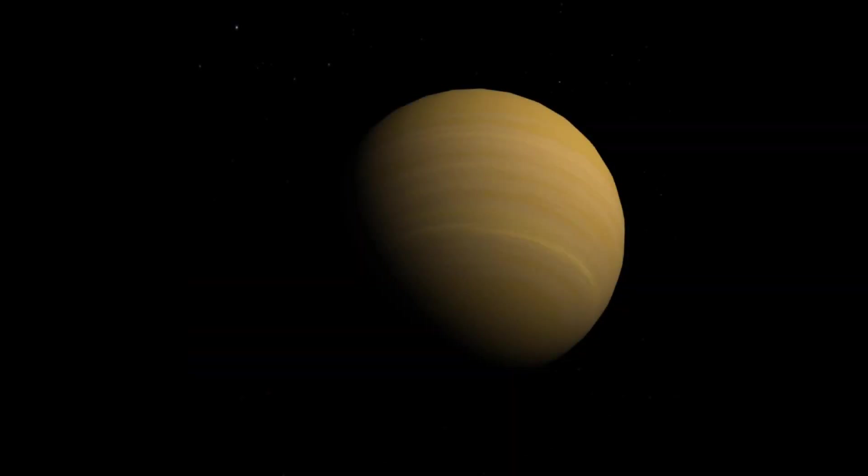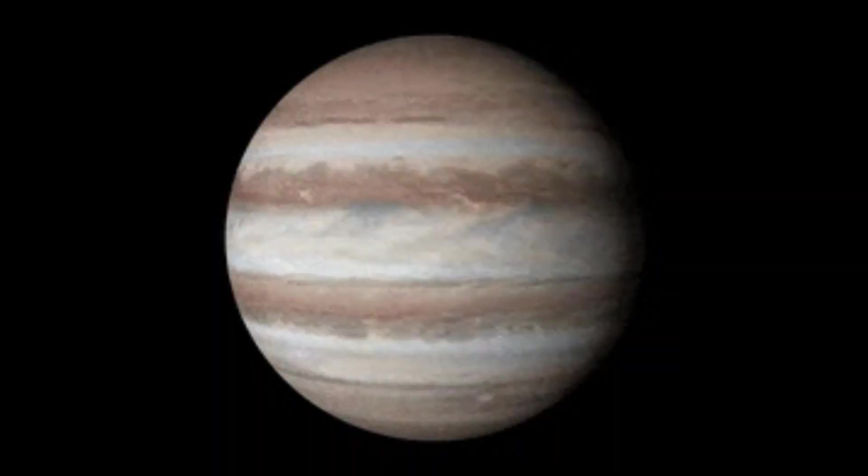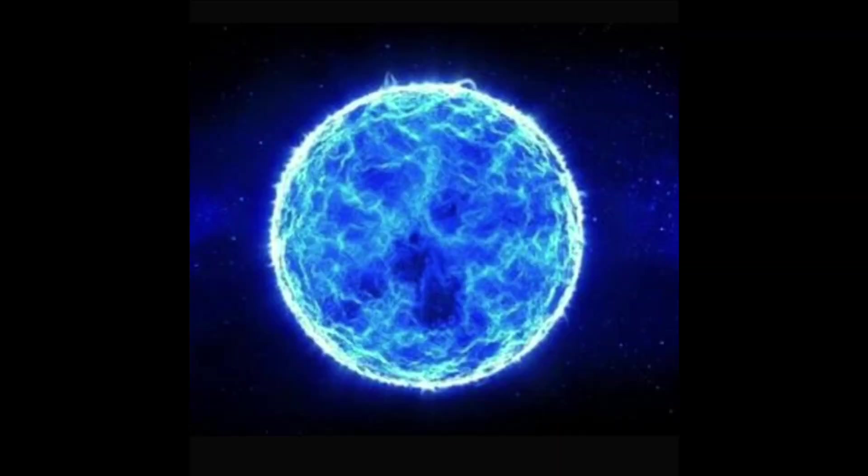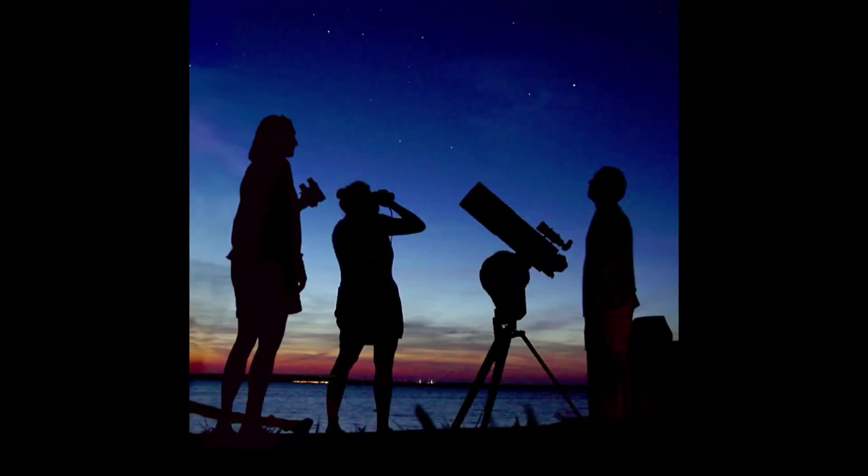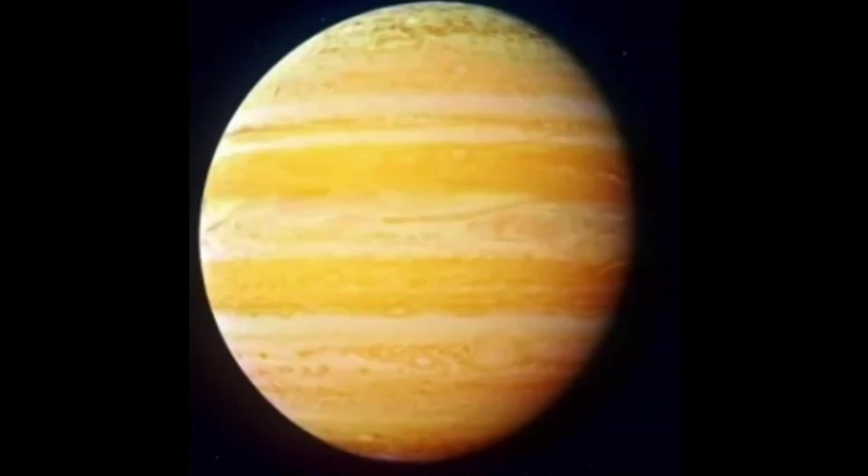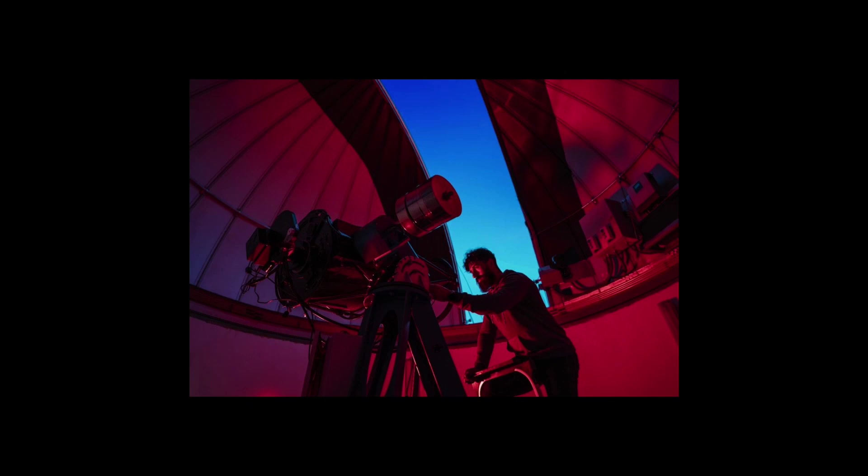HD 100546B may be the largest planet ever discovered. It's so large that it's seven times the radius of Jupiter along with being similar in size to its own star. Despite its size, many scientists and astronomers argue on its mass along with its classification as a planet or brown dwarf. Some scientists even believe that it's a combination of both.